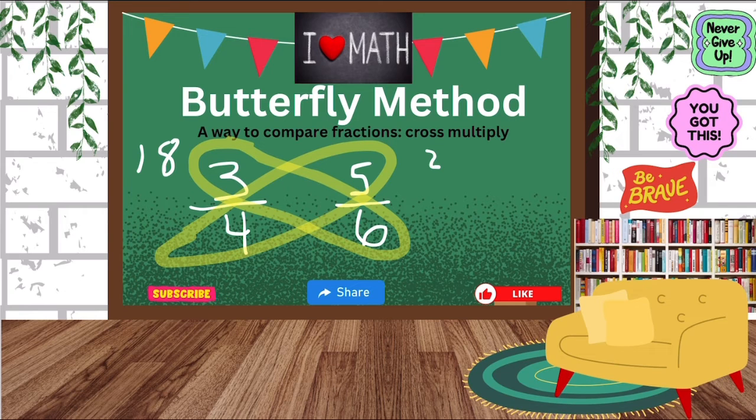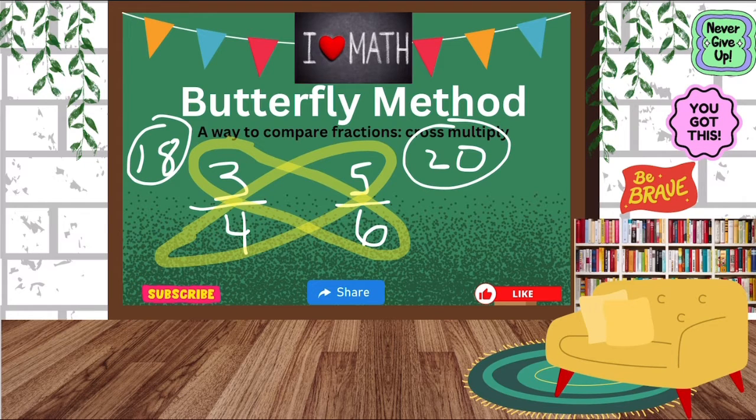And the 20 is going to go on the side with the five because we started with the five. So now we have 18 and 20. We're going to compare those. 18 is smaller than or less than 20.